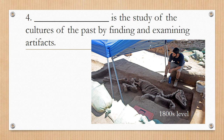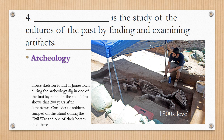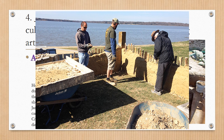Number four: Blank is the study of the cultures of the past by finding and examining artifacts. The answer is archaeology — a hard word to spell, so take your time. The horse skeleton found at Jamestown during an archaeology dig in one of the first layers under the soil shows that Confederate soldiers camped on the island during the Civil War. The archaeologists dug only about one to two feet down to find the skeleton; they would need to dig two to four feet down to locate Jamestown artifacts from the 1600s.